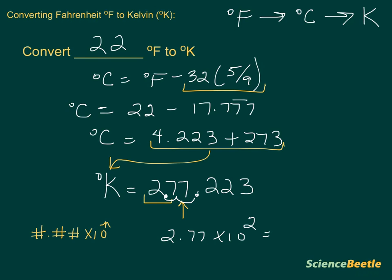But because this is three significant figures and I only need two, this seven actually rounds the first seven to an eight. So, my final answer is 2.8 times 10 to the second. And this is going to be in Kelvin. So, here's my final answer.